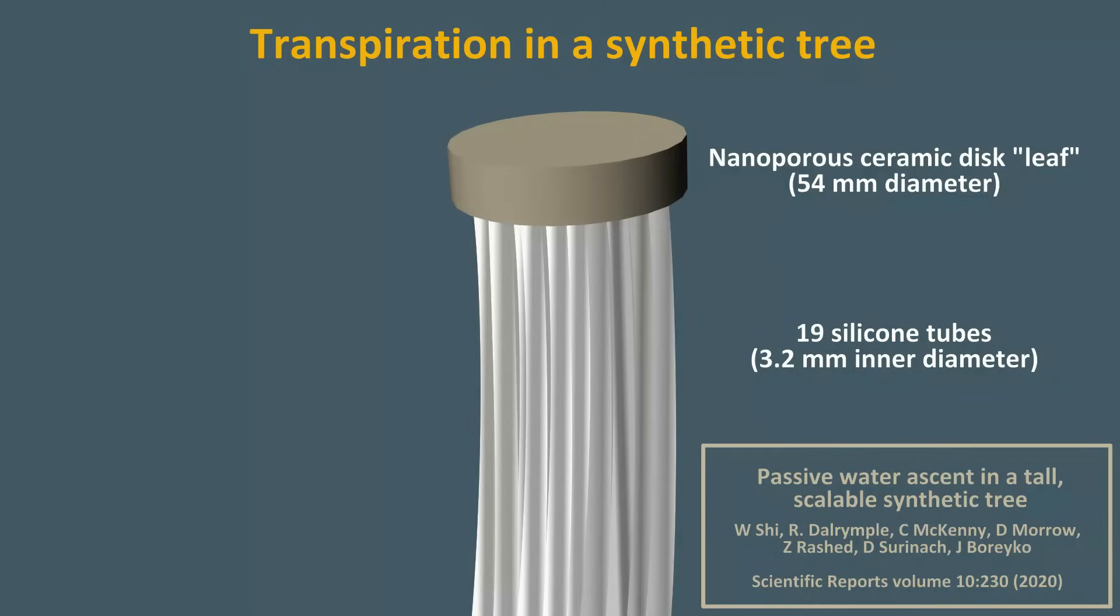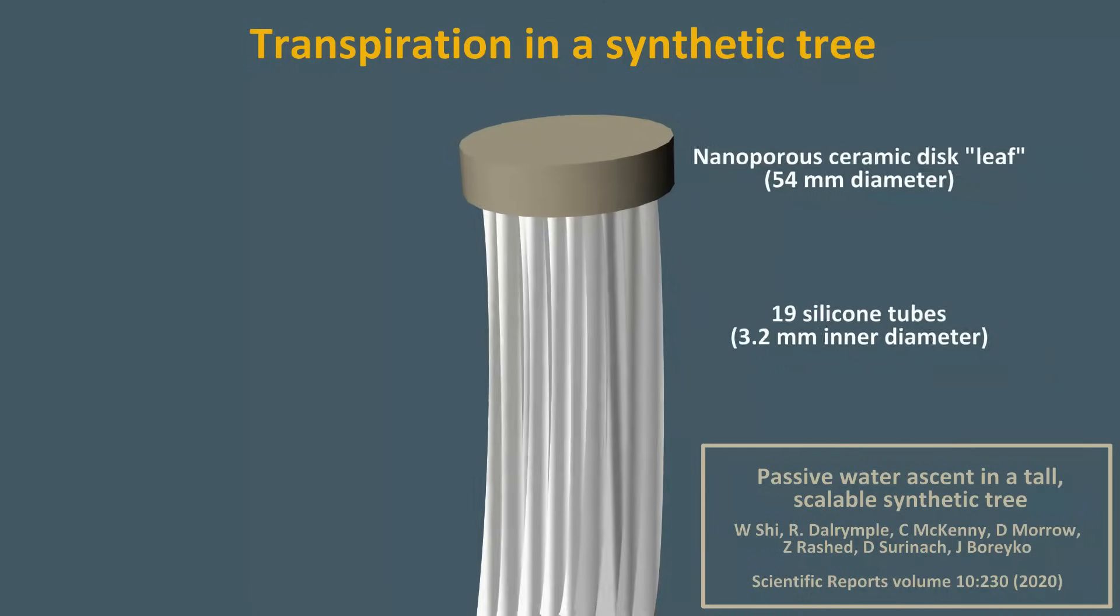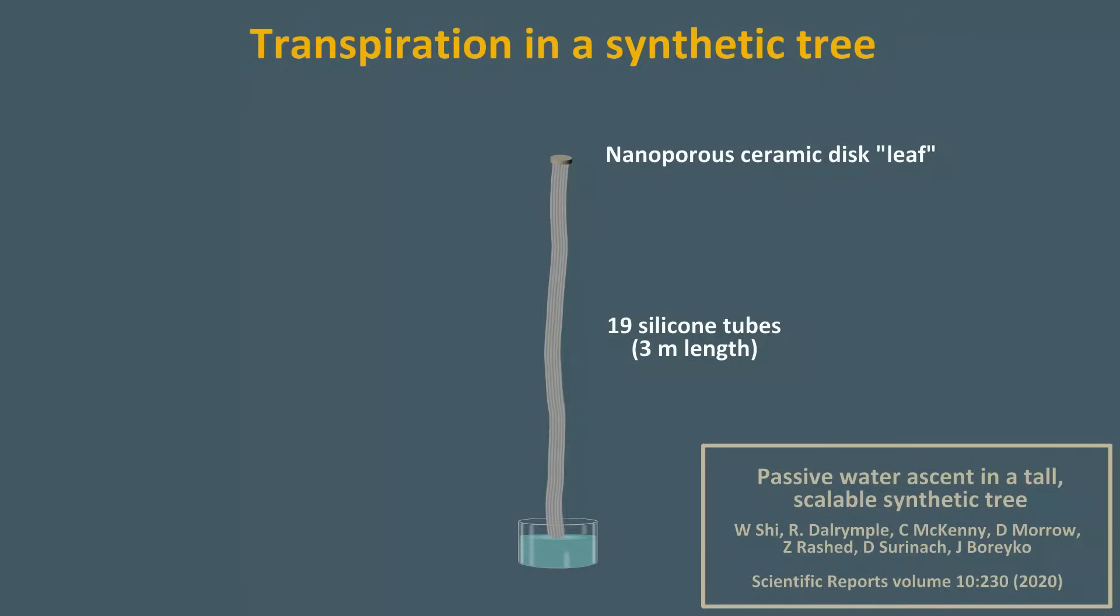These scientists immersed one end of this capillary tube bundle in a tub of water, and witnessed the upward flow of water against gravity to a height of 3 meters. The total mass of the water in the tubes was 458 grams, one pound in water weight. As water evaporated from the disc, there was a water potential at the leaf, calculated to be about minus 30 kilopascals, which drew the water up from the reservoir.